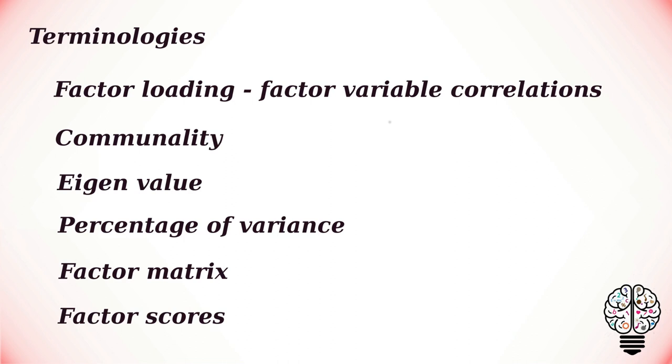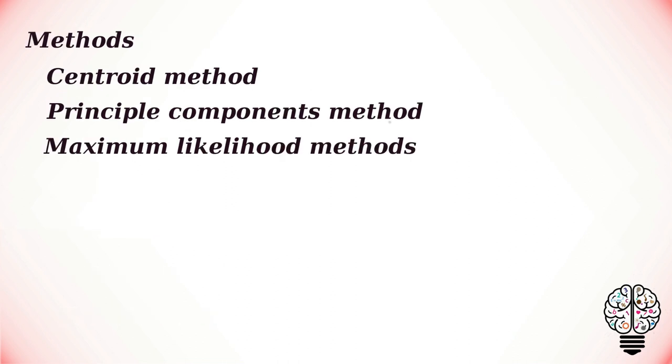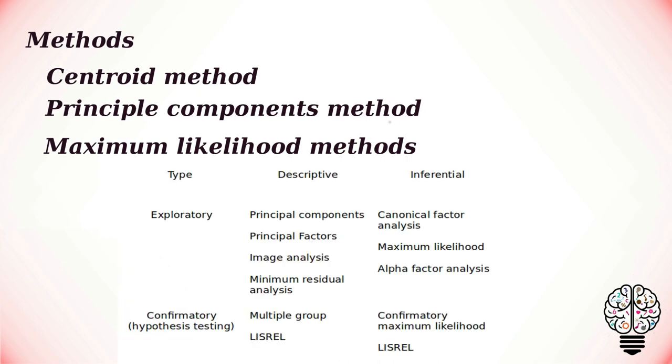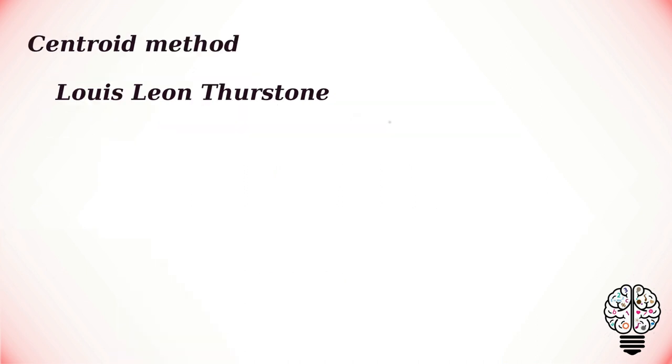Some of the important methods of factor analysis are the centroid method, the principal components method, and the maximum likelihood method. The centroid method was developed by Lewis Leon Thurston. This method was frequently used until about 1950, before the advent of large capacity high-speed computers.